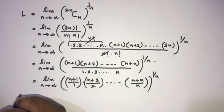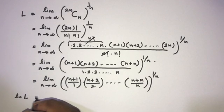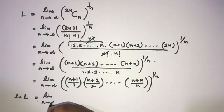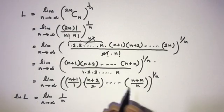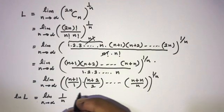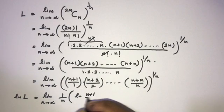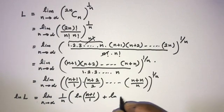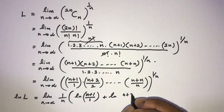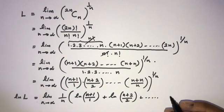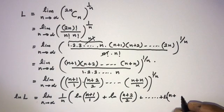Now if we take the natural log of both sides, natural log of L equals 1 over n, and we can write this product as a sum: natural log of (n plus 1) over 1, plus natural log of (n plus 2) over 2, going up to the last term natural log of (n plus n) over n.